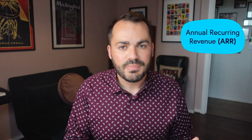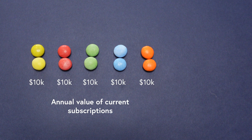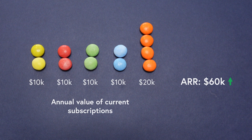There are two common metrics we use to track recurring revenue: Annual Recurring Revenue (ARR) and Monthly Recurring Revenue (MRR). To calculate ARR, you simply take all of your current subscriptions and add up everything they are due to pay over the next 12 months. So if you have five subscribers each paying $10,000 a year, your ARR is $50,000. If one subscriber upgrades to a $20,000 plan, your ARR goes up to $60,000.